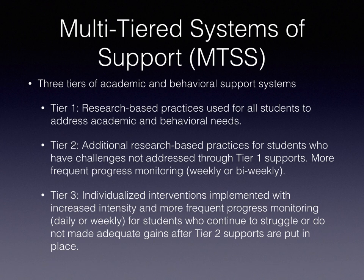At the Tier 2 level, you would look at additional research-based practices for students who continue to have challenges, either in behavior or a specific academic area. You would put those strategies and supports in place and increase the frequency of progress monitoring — preferably taking data at least once a week on the outcomes you are hoping to accomplish through your Tier 2 interventions, or at a minimum bi-weekly data points.